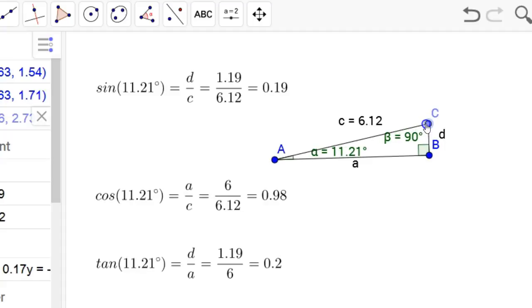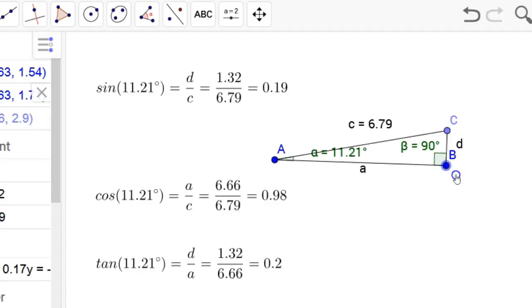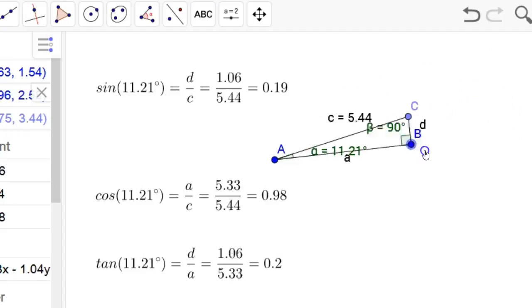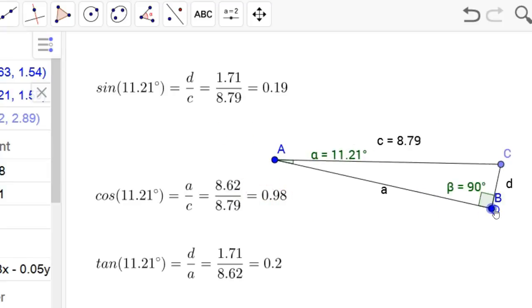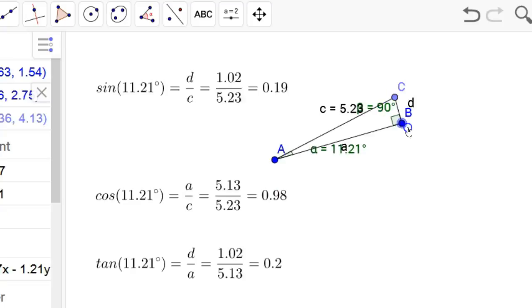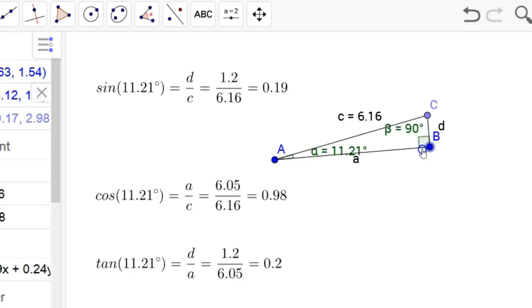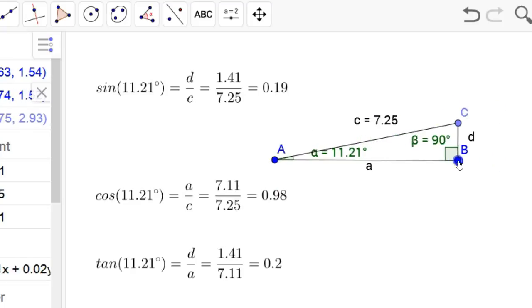And we could change it to a different angle, maybe around 11 degrees. Again, you know, sine of 11.21 is 0.19. And again, I'm rounding some decimals here on all of these. But this just shows you dynamically how, no matter the size of the triangle, if you've got a right triangle and it's 11.21, sine is 0.19, cosine is 0.98, tangent is 0.2, no matter the side lengths.